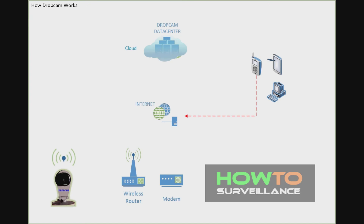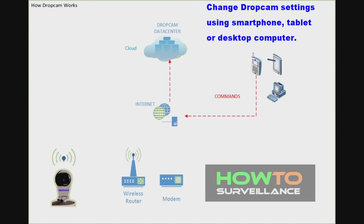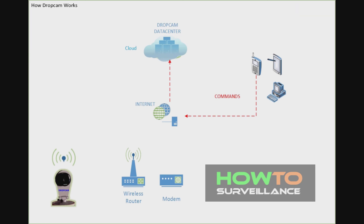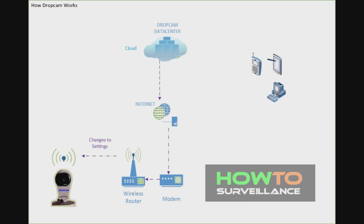Settings on the DropCam can also be changed and updated from a remote location. An active user that is logged into the system can initiate a change to the settings from a desktop computer or smart device. This information signal is sent through the internet to the DropCam cloud servers. After the signal is received and processed, the servers send information packets containing the settings changes through the internet back through the network path to the router, which then transmits the settings changes wirelessly to the DropCam.